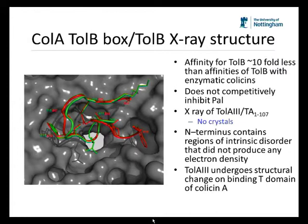The comparison of the two structures shows that there is some similarity in the protein fold, but also some differences in the specific interactions of both TolB boxes. We know that colicin A binds to TolA, whereas the enzymatic colicins do not bind to TolA. To enhance our understanding of the translocation of colicin A, we wanted to determine the co-crystal structure of the TolA binding region of colicin A with TolA3.